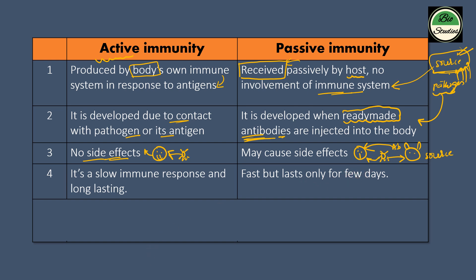With active immunity, when a pathogen attacks, the body needs to recognize and respond to the pathogen, so it takes some time — a slow immune response. But once activated, the immune response is long-lasting because we form memory cells, which are used to protect our body.